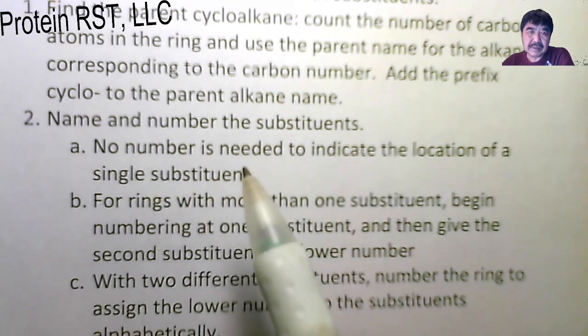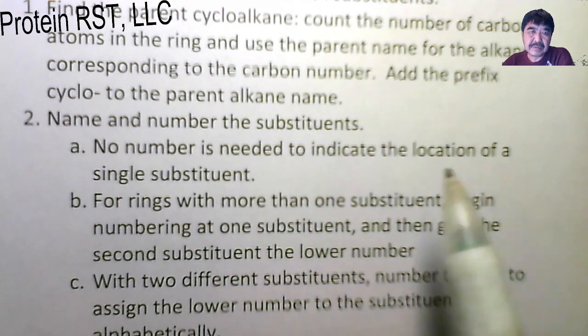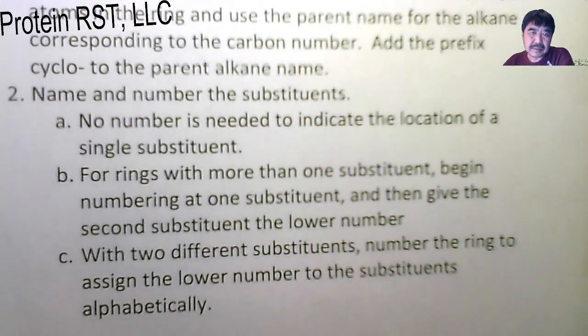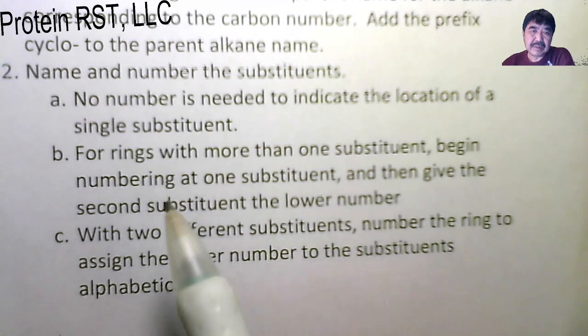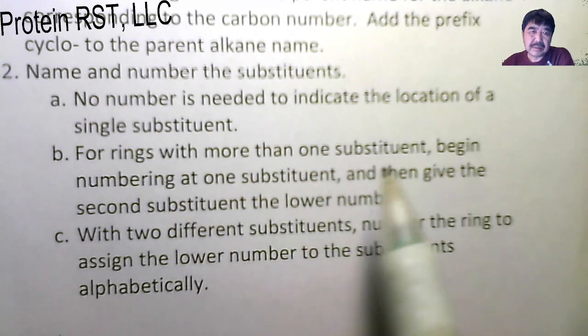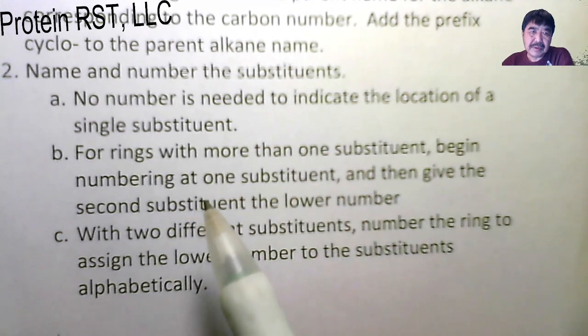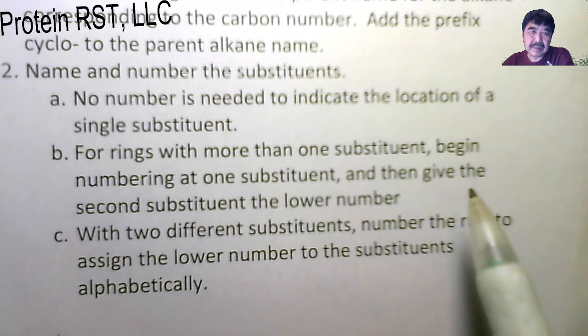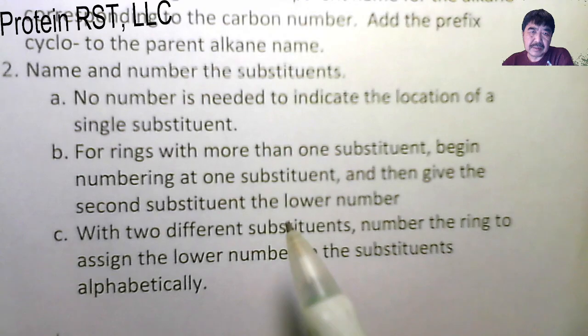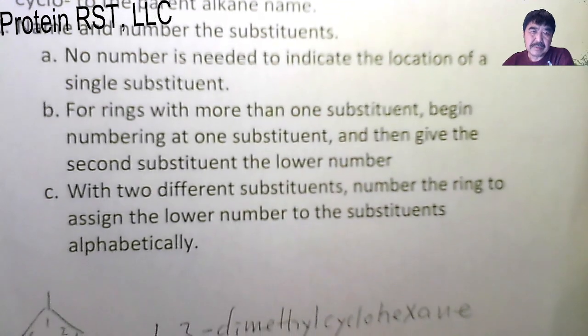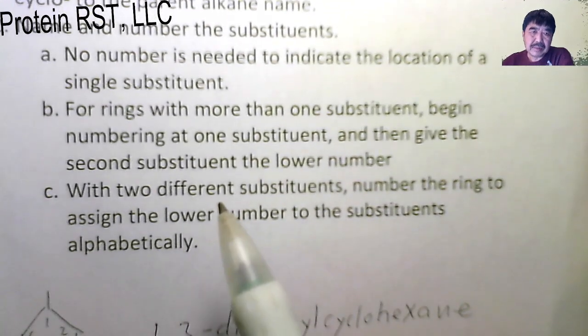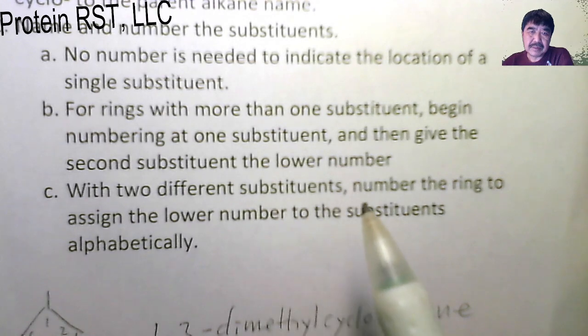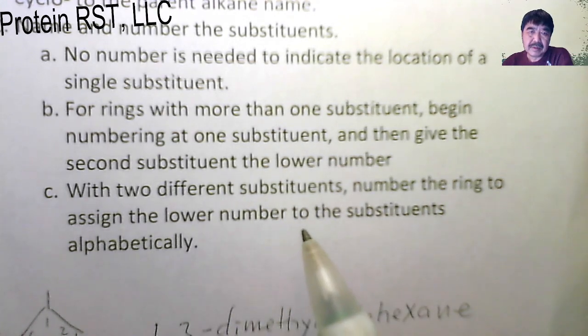No number is needed to indicate the location of a single substituent. For rings with more than one substituent, begin numbering at one substituent, then give the second substituent the lower number. With two different substituents, number the ring to assign the lower number to the substituent alphabetically first.